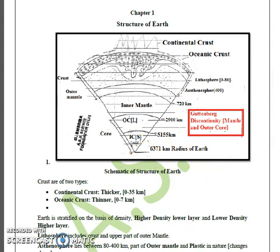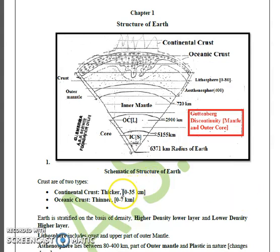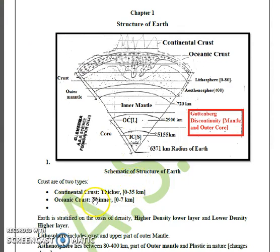Now we will discuss the details of the crust. The crust is of two types: continental crust and oceanic crust. Continental crust ranges in thickness from 0 to 35 km and can go up to 70 km. Oceanic crust, on the other hand, ranges from 0 to 7 km. Comparing both, the continental crust is thicker whereas the oceanic crust is thinner.